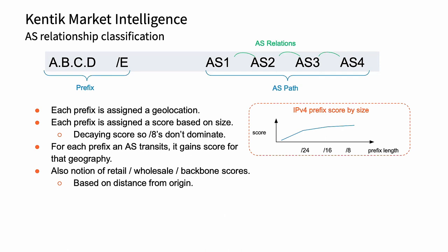That's the AS path side — the AS relationship classification. On the prefix side, we assign each prefix a geolocation, and then we assign it a score based on size. It's a decaying score that tries to prevent really large prefixes from dominating things, since slash-eights are really used more as placeholders than as prefixes that drive traffic from point A to point B. The interesting stuff is the /24s, /23s, and /22s — that's where it gets interesting. We also have a V6 equivalent to all of this.